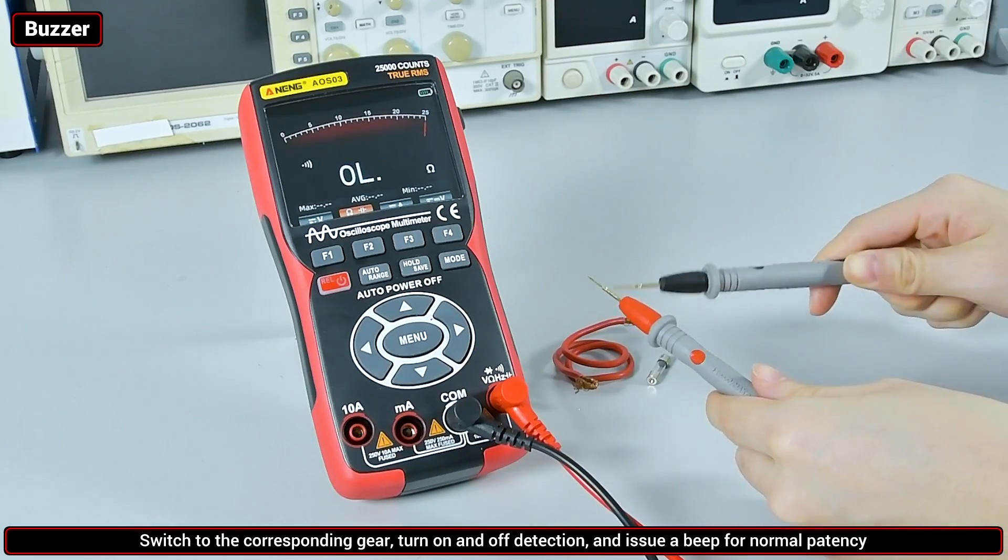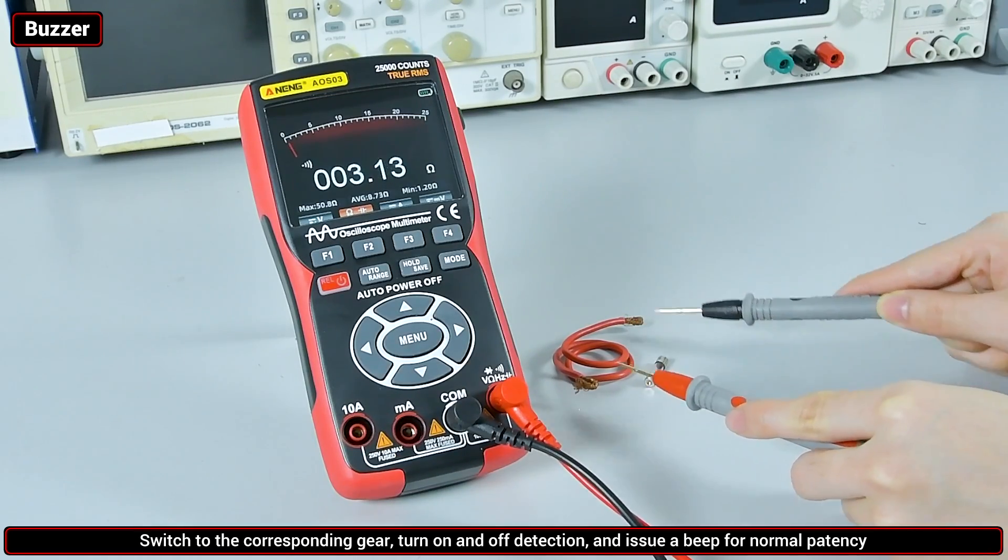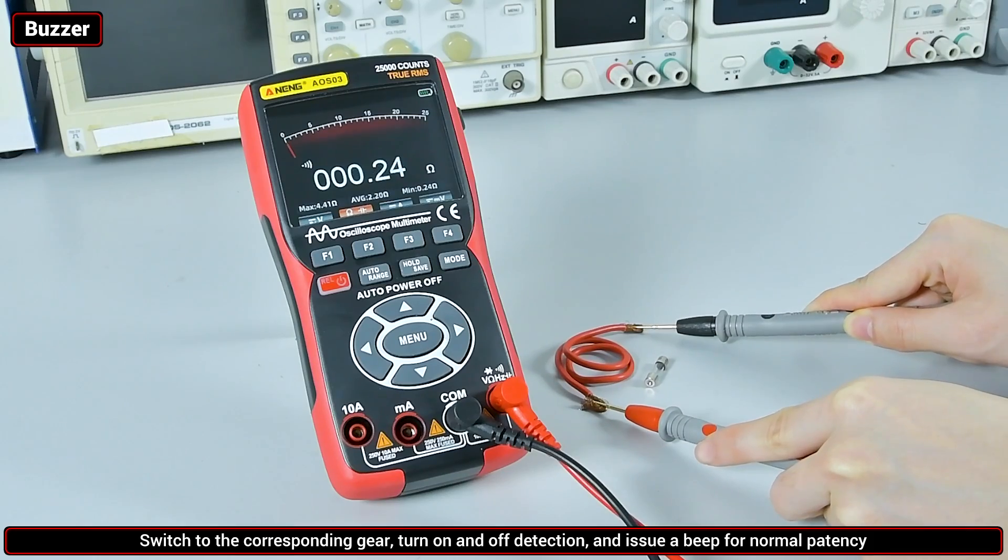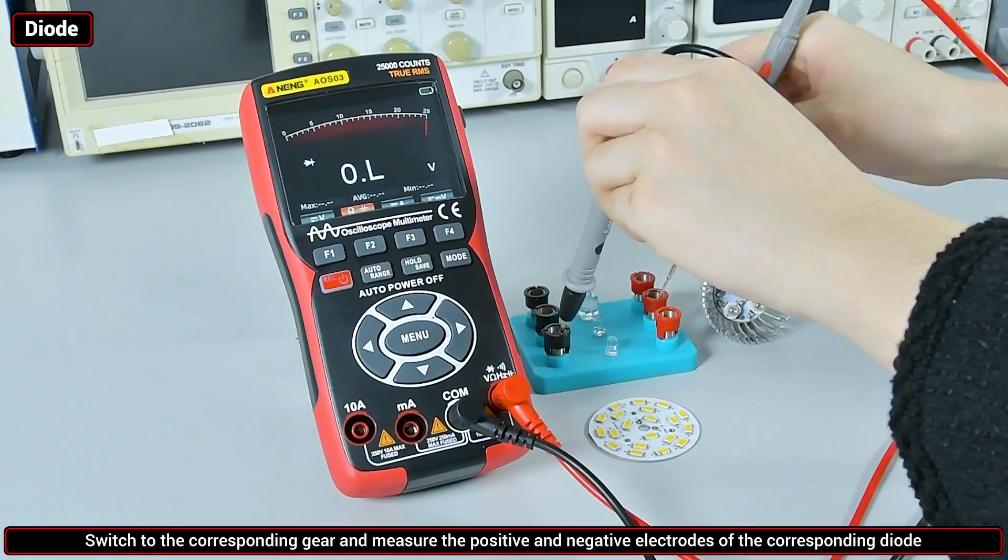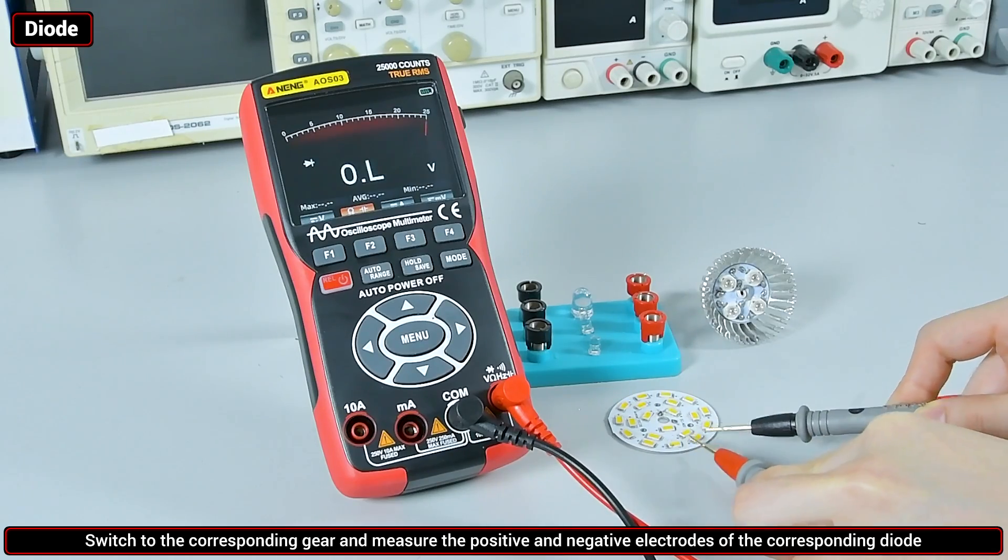Buzzer: switch to the corresponding gear, detect on and off and issue a beep for normal patency. Diodes: switch to the corresponding gear. It can be measured corresponding to the positive and negative electrodes of the diode.